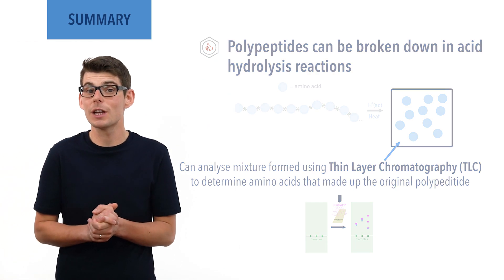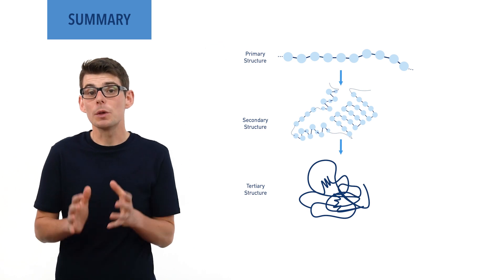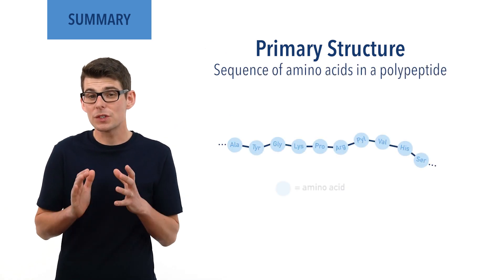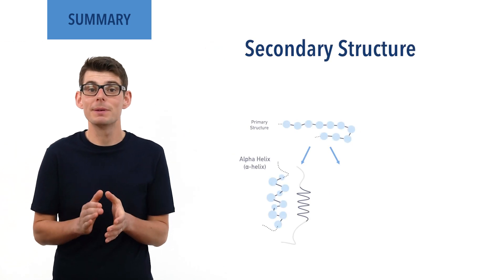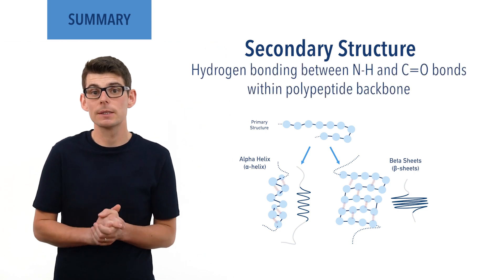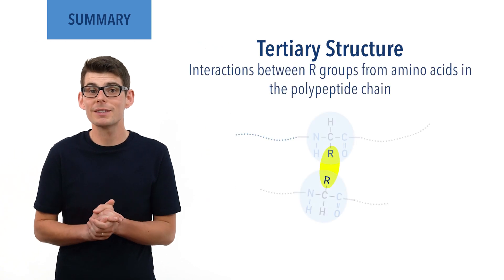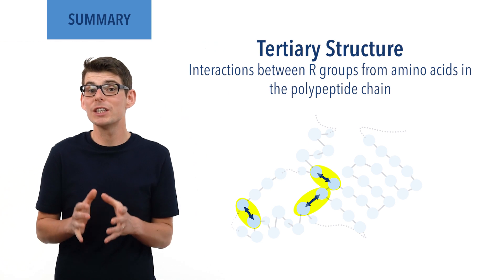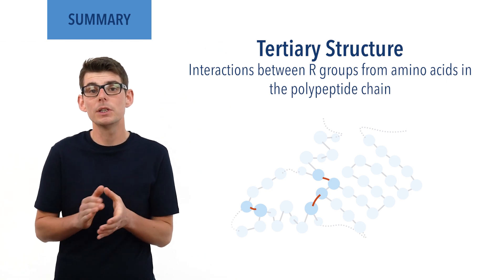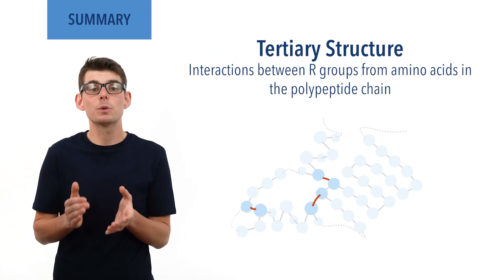Proteins have complicated three-dimensional shapes and their structure is broken down into three levels: primary, secondary and tertiary. The primary structure is described as the sequence of amino acids bonded together in the polypeptide chain. The secondary structure is the formation of alpha helices or beta pleated sheets by the forming of hydrogen bonds between NH and C=O bonds from different peptide links. The tertiary structure is described as the formation of attraction forces between R groups on different amino acids from different parts of the polypeptide chain, causing the chain to further fold and remain folded. These forces can be intermolecular between nonpolar R groups, permanent dipole-dipole for polar R groups, hydrogen bonding, ionic attraction, and disulfide bridges between R groups that contain sulfur.